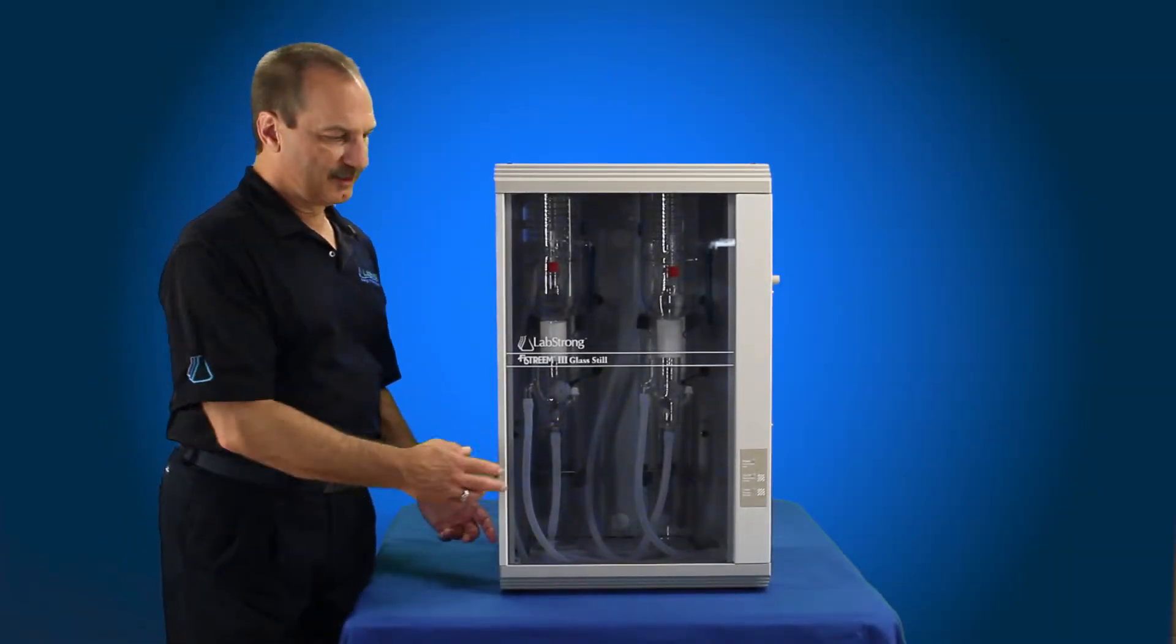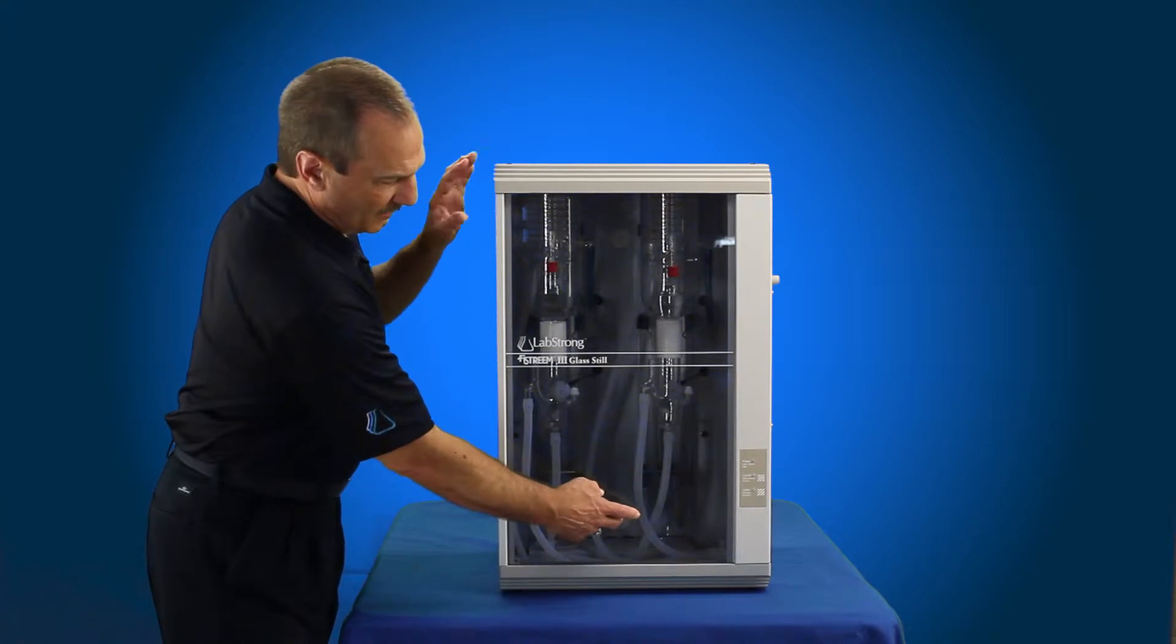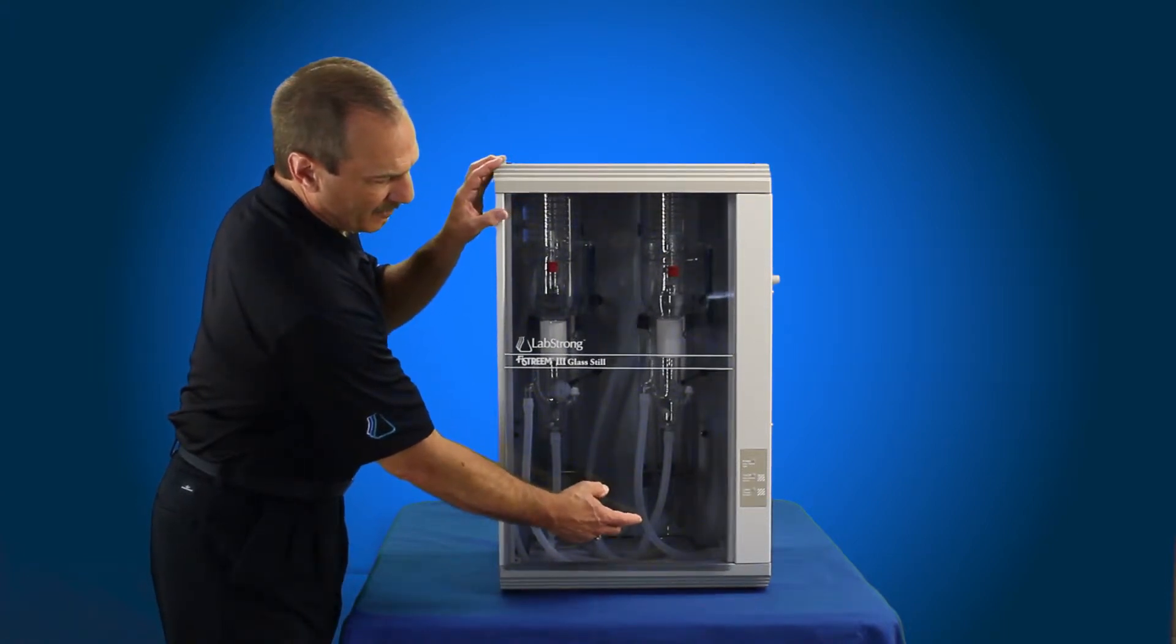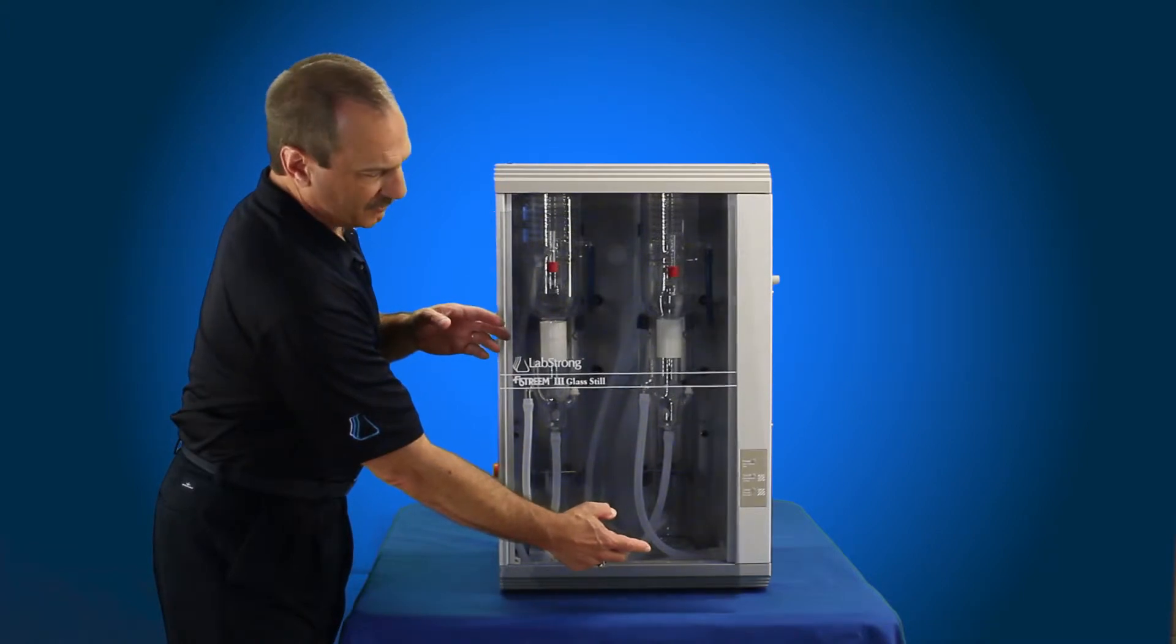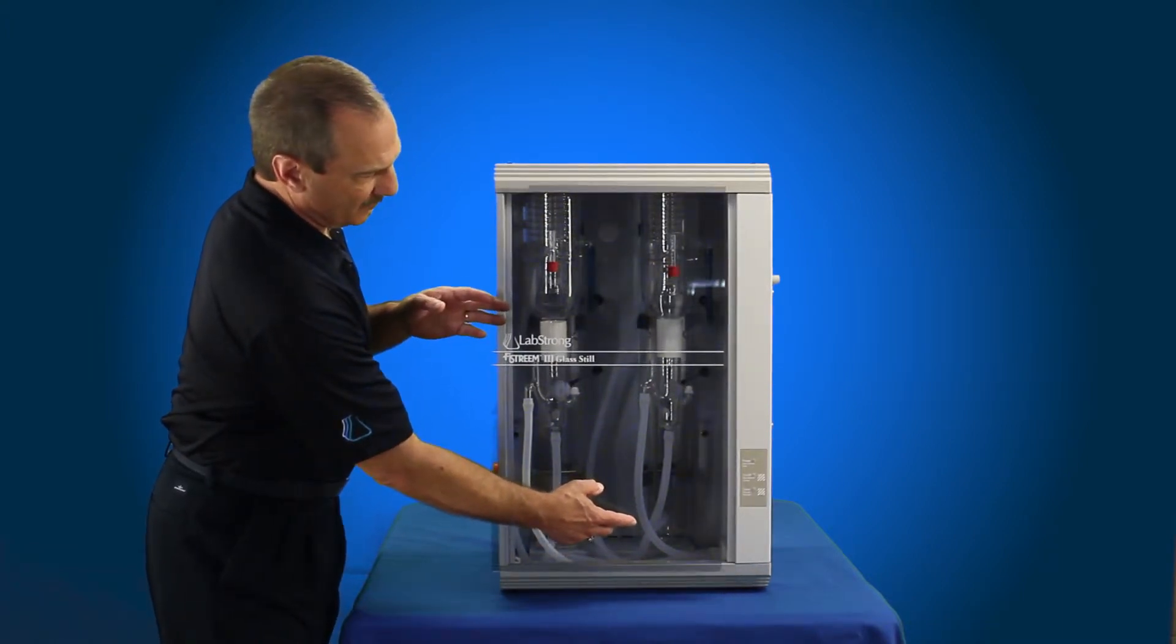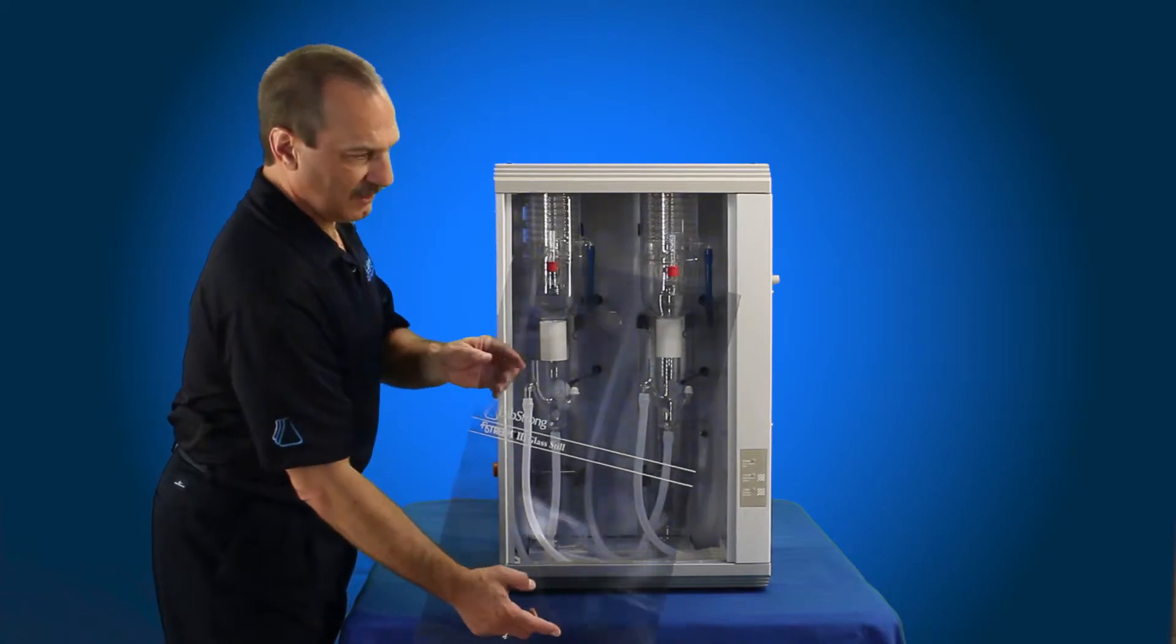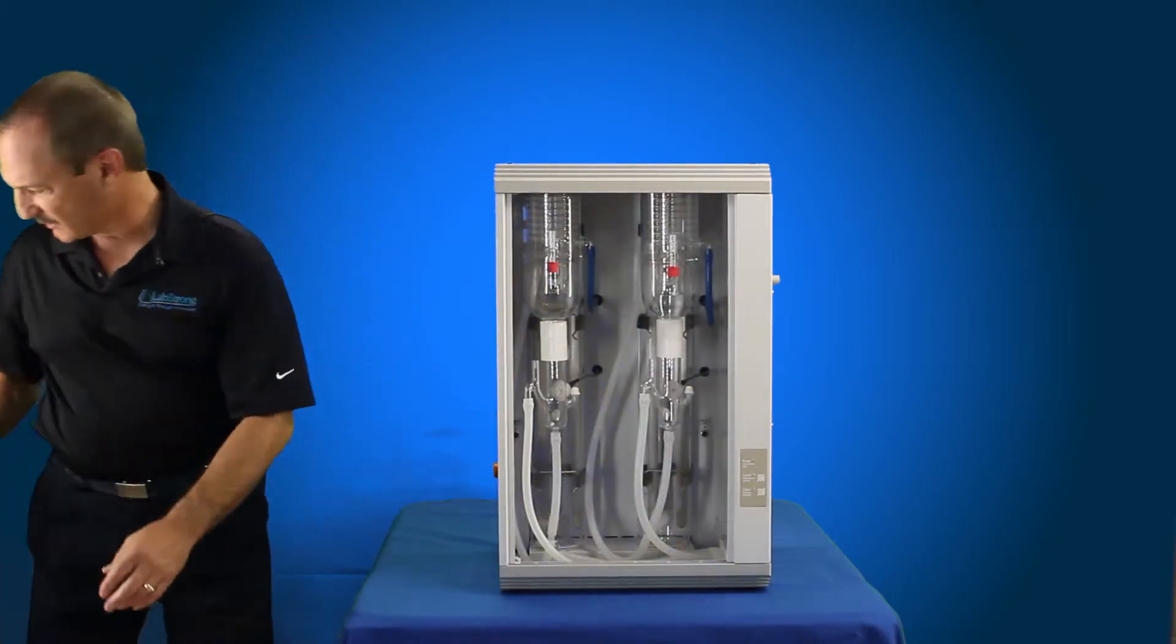Now we're going to remove the door from the eight-liter per hour FiveStream 3 system. The FiveStream 3 four-liter per hour system, single distilled, has the same type of door, it's just a little smaller. So you're just basically going to lift up, pull out of the bottom, pull the top down, and you remove the door. Set that aside.